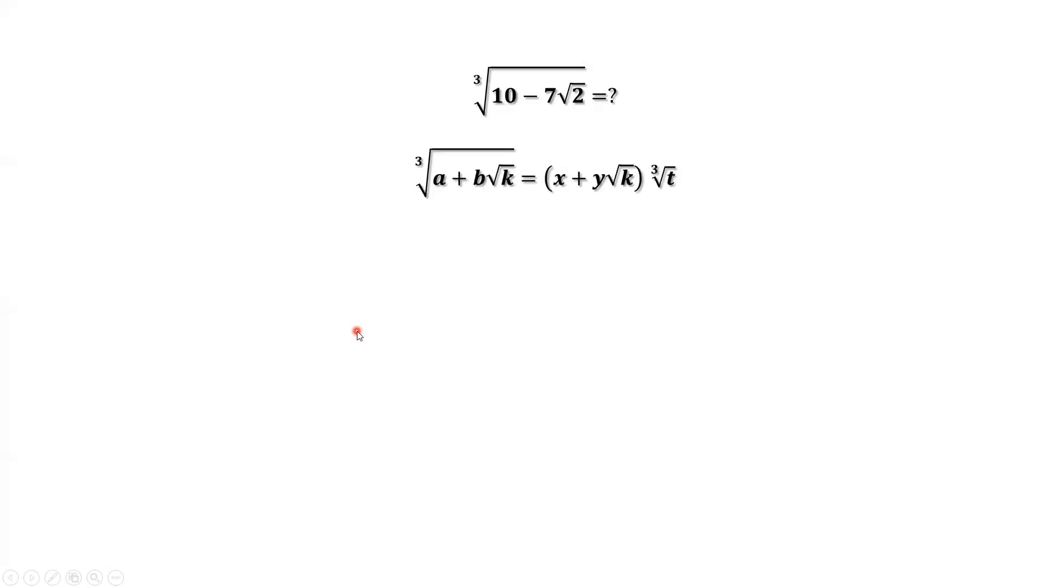Back to our question. What is a? That's 10. What is b? Negative 7. What is k equals 2? We can assume our question equals x plus y times square root of 2, then times the third root of t. The remaining question is how to find integers x and y and rational number t.